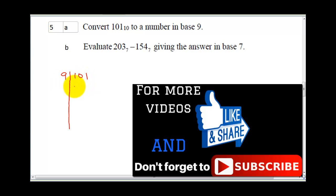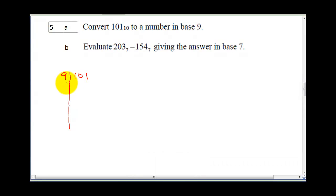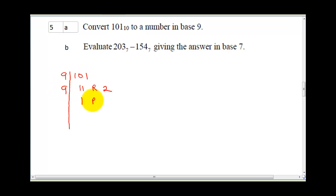9 into 101 — you're going to have 11, that's supposed to be 99. So that's 11, and we'll have a remainder 2. That's 99 plus 2, which gives you back your 101. 9 into 11: you have 1 and remainder 2. Then 9 into 1, it cannot go — that's going to be 0, remainder 1.